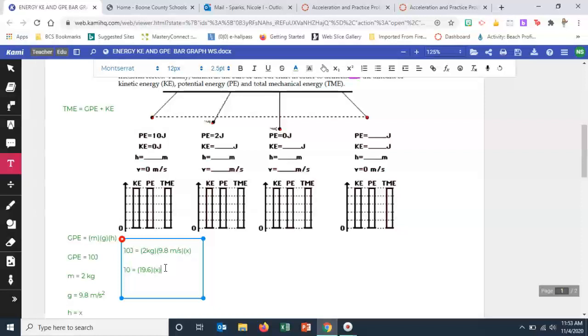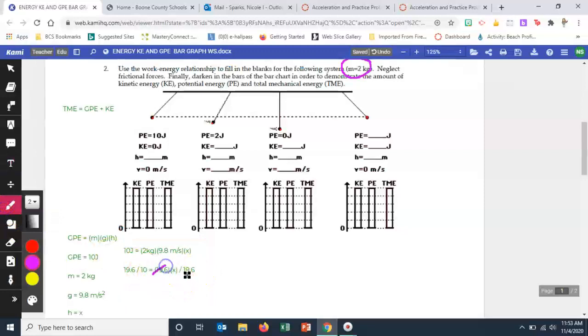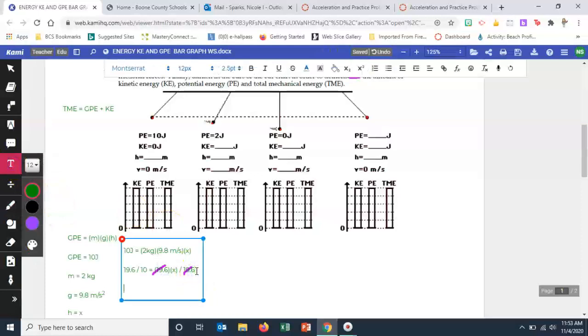My next one is I want to get x alone. So in order to get x alone, if it's in a multiplication process, we have to do the inverse of it, which is division. So we're going to divide each side and get rid of the 19.6 so that we can get x by itself. And so therefore, we're now just taking 10 and dividing by 19.6. And I end up with 0.54. So x equals 0.51 and that's going to be meters.